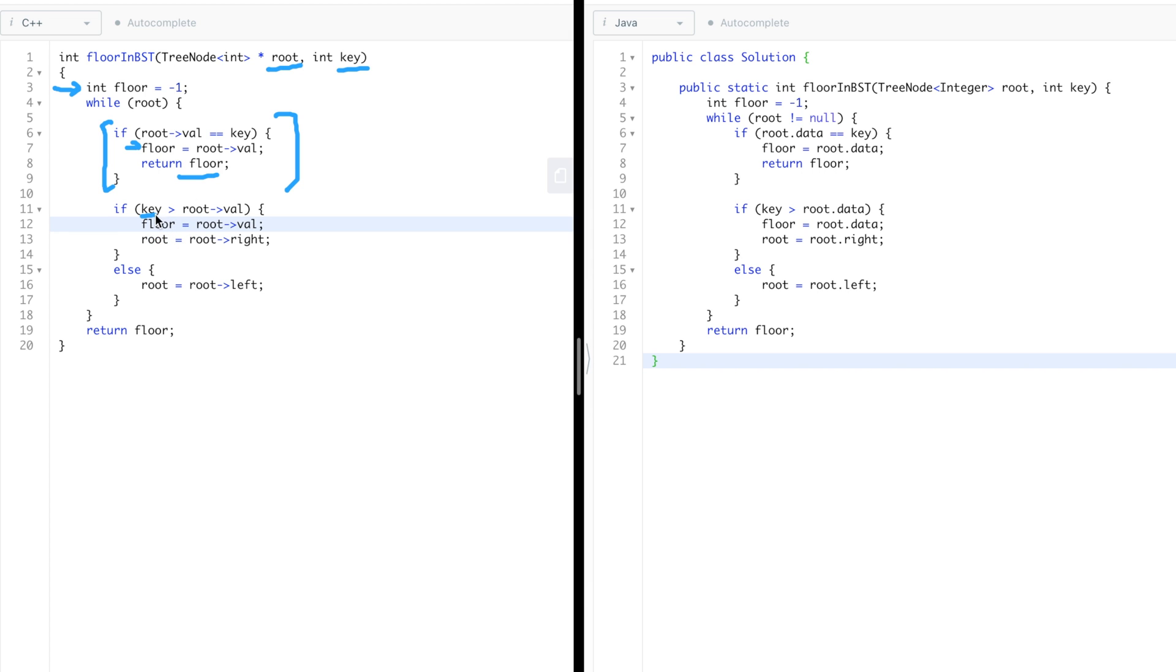Now, what if the key that's given to you is greater than the current root value that you're standing at. If that's the case, then you need to increase it. And in order to increase it, you move right. Just make sure you store the floor. What if it's not? Then just go left because you need to decrease. You need to have it under key. Yes, you need to have it under key. So just go left. That's how you can find floor in a binary search tree.